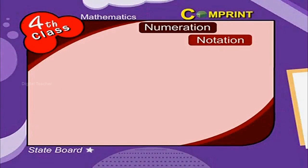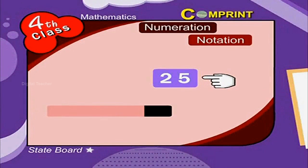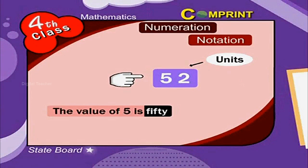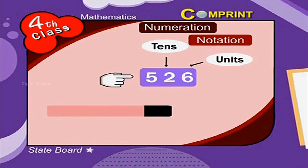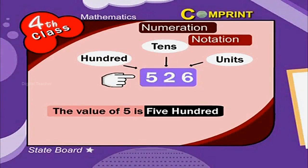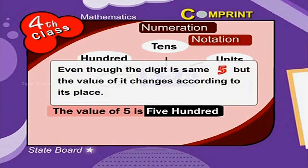Let us see one more example. In the number 25, the value of 5 is 5 since it is in units place. In the number 52, the value of 5 is 50 since it is in tens place. In the number 526, the value of 5 is 500 since it is in hundreds place. Even though the digit is the same 5, the value of it changes according to its place.